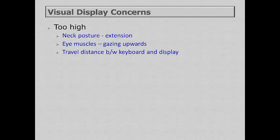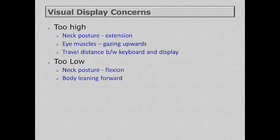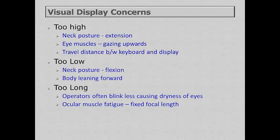If a display is too high, the neck will be more in extension and eye muscles will be gazing upward, when our natural tendency is to gaze slightly below horizontal. For a hunt-and-peck or one-handed typist, the distance between looking at the keyboard and looking at the display is greatly increased when the display is too high. If the display is too low, it can cause neck flexion and encourage the person to lean forward. Staring at displays too long also causes problems — computer users tend to blink less, leading to drier eyes, and the fixed focal length causes ocular fatigue.